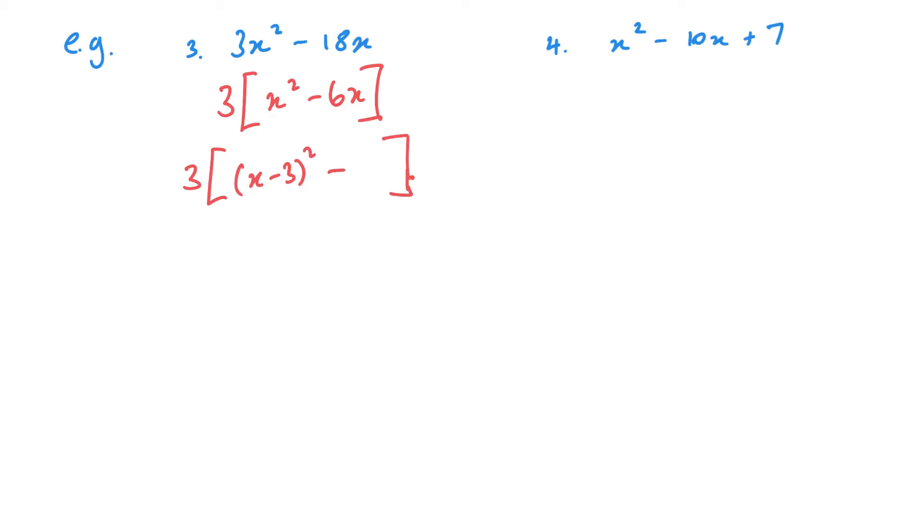So x squared minus 6x will become x minus 3 squared, and I need to take away that minus 3 squared. So we've got 3 times x minus 3 squared minus 9. Now I can multiply everything by 3, so we get 3 times x minus 3 squared minus 27. That's my completing the square done. You don't have to use square brackets, I've just shown it there so it's clearer to see on screen.